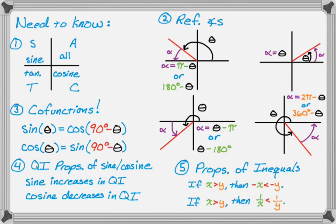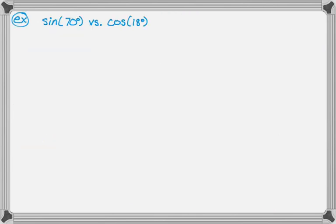The sixth thing we need is the reciprocal identities: cosecant is 1 over sine, secant is 1 over cosine, and cotangent is 1 over tangent. Now let's do a bunch of examples, starting easy and getting more complicated.